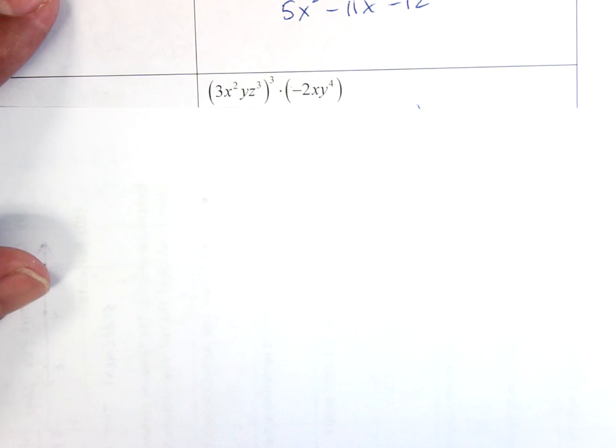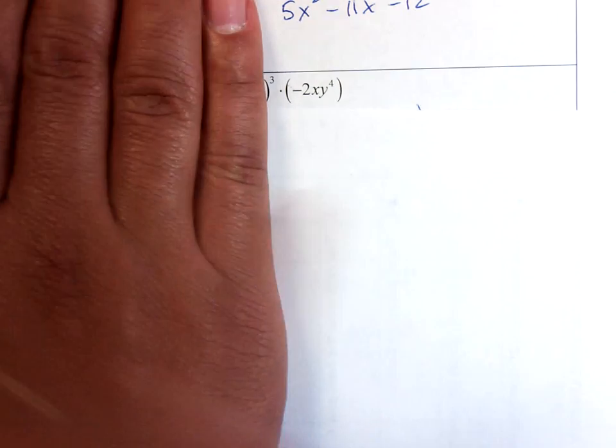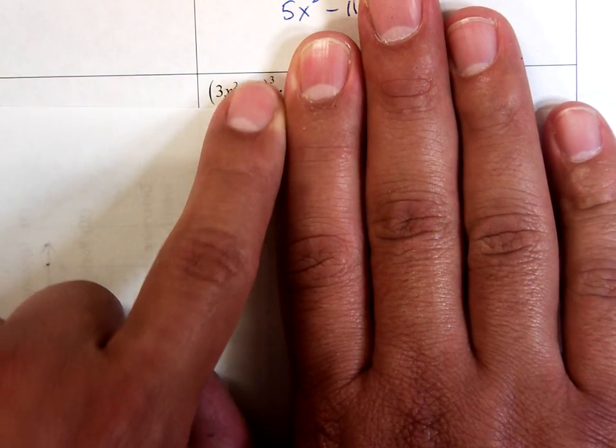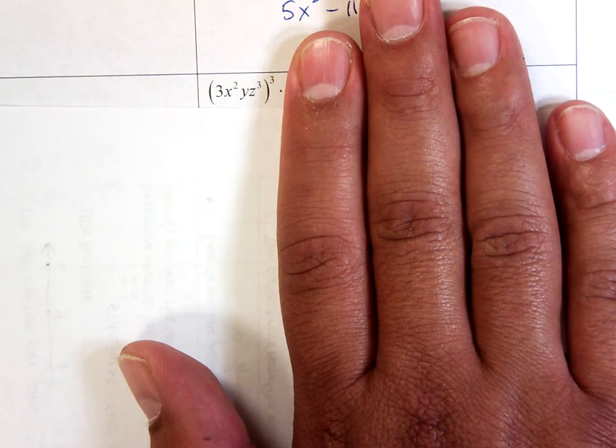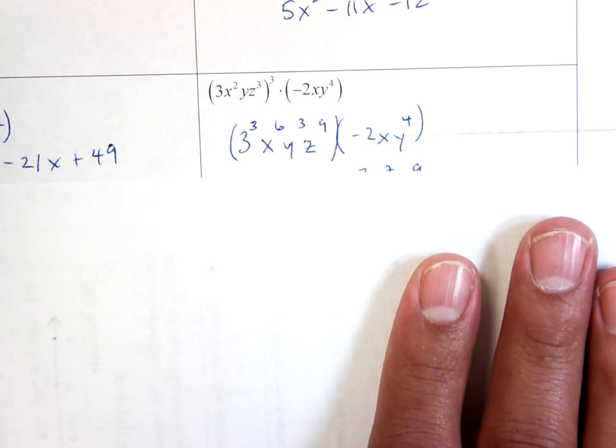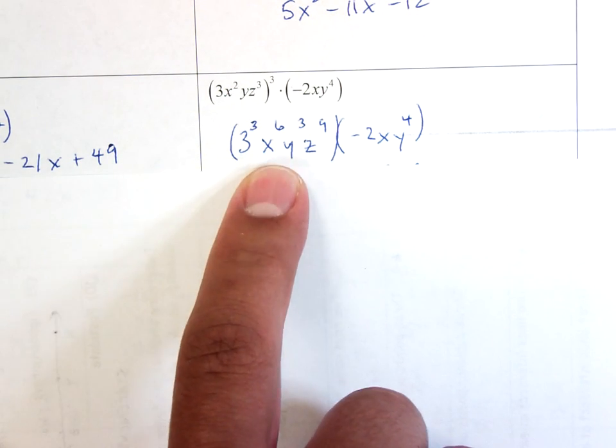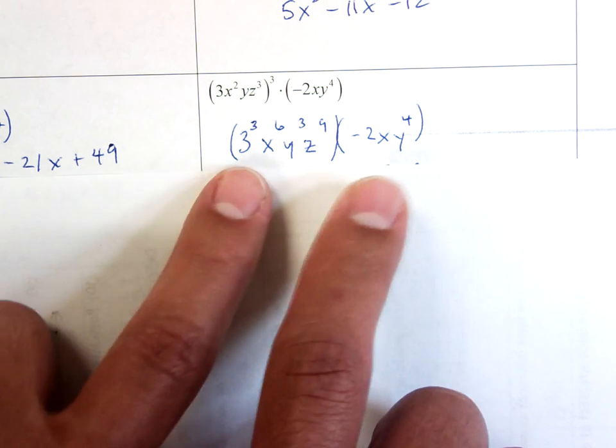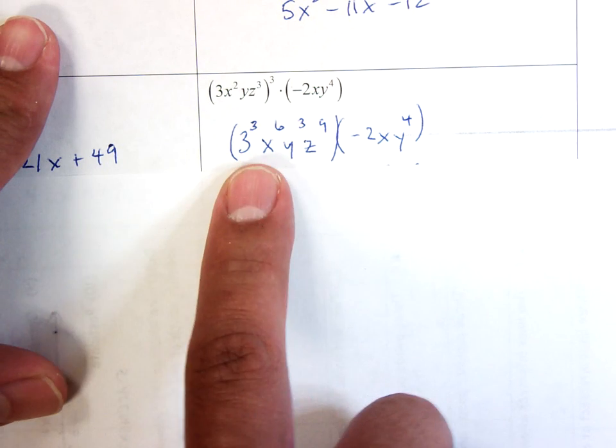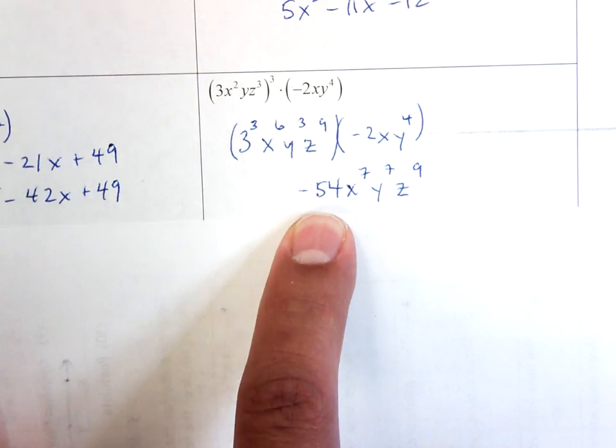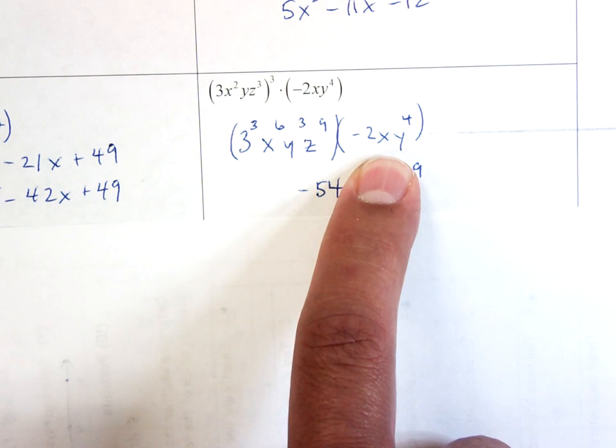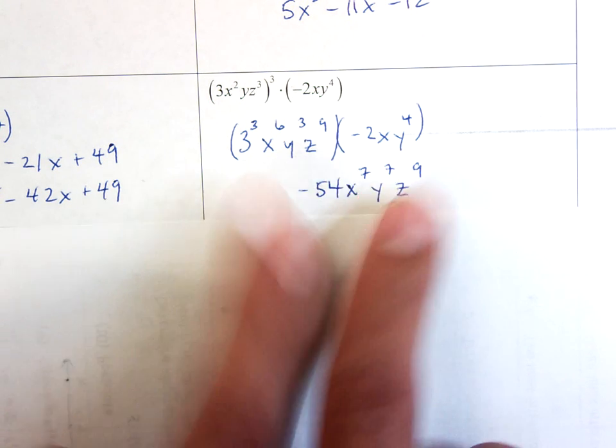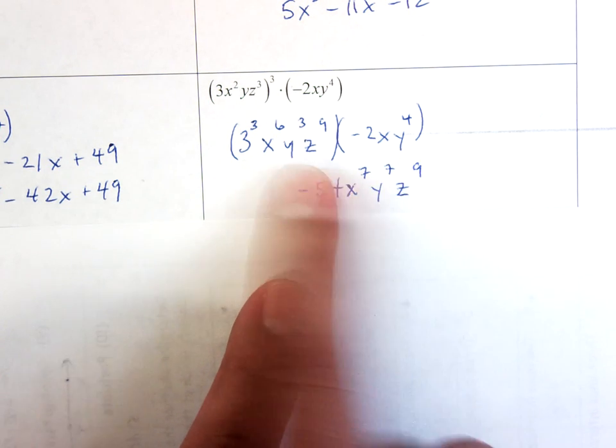This one, there's not much to do. I can leave this one exactly the way it is. This one I have to run that outside 3 and multiply that by all the exponents on the inside. So when I do that, I get 3³, x⁶, y³, z⁹. I just rewrote that one, I didn't touch it. And then I got to multiply 3³ times negative 2. 3³ is 27 times negative 2 is negative 54. x⁶ times x¹, you add the exponents and you get x⁷. y³ times y⁴ gives you y⁷ and I have no other z terms, which is z⁹.